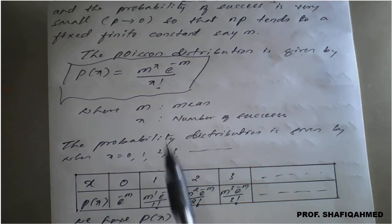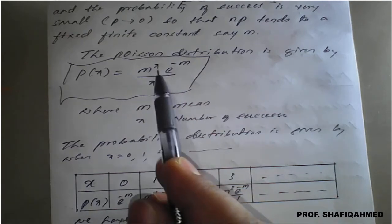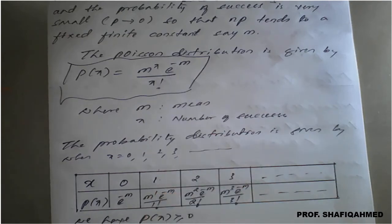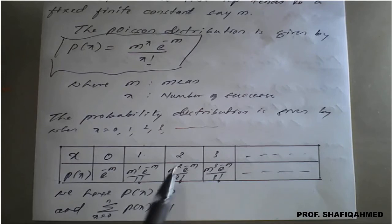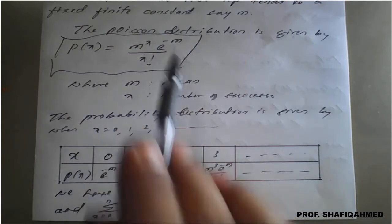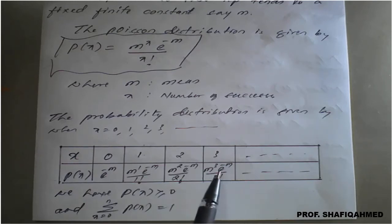When x equals 2, it will become m raised to 2, e raised to minus m, divided by 2 factorial. Similarly, when x is 3, it will become m raised to 3, e raised to minus m, divided by 3 factorial. In this way, the distribution will be formed.